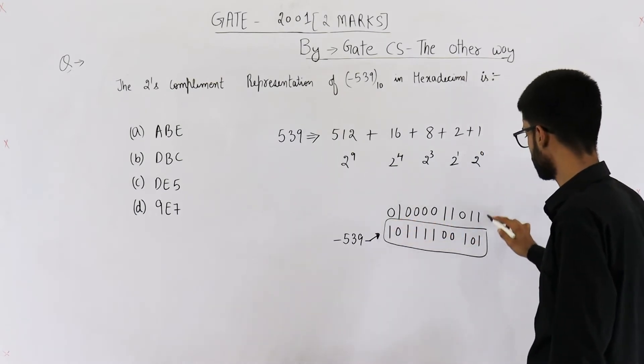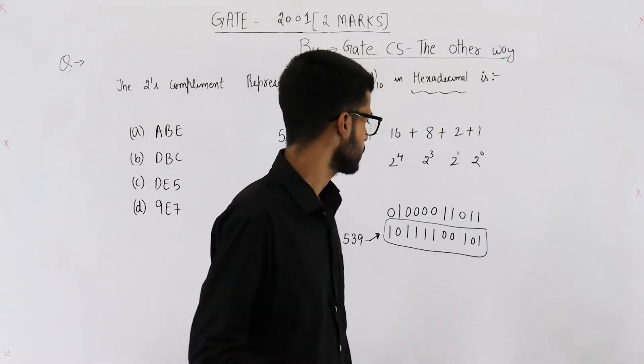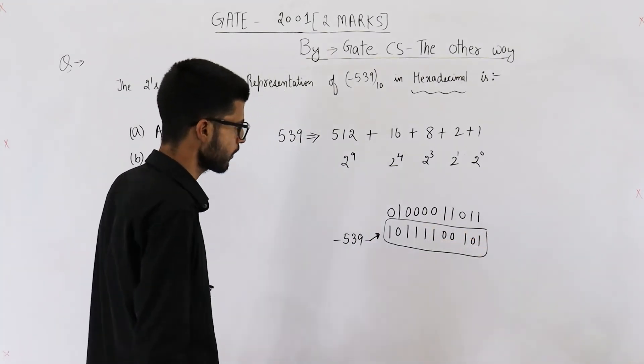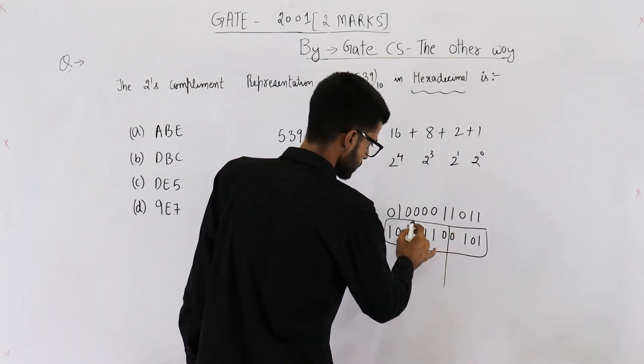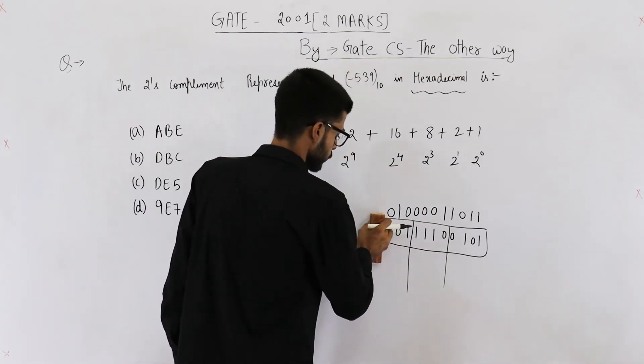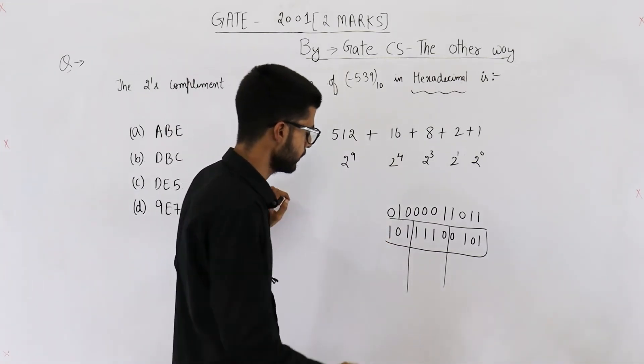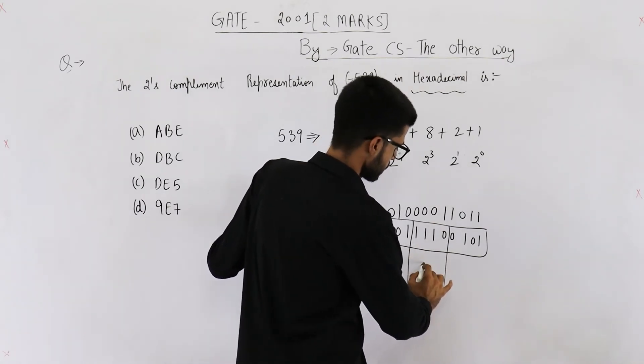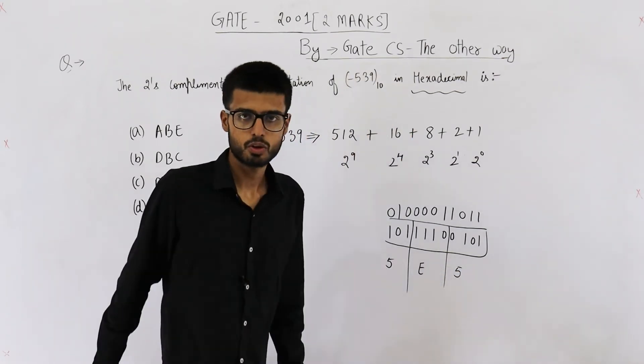Now we want its hexadecimal notation. To convert it into base 16, let us combine 4 bits starting from right hand side. So these are 4 bits, the next 4 bits are these, and you can combine the last 4 bits. This is the last group, so this will be 5, this is E, and this is 5. But you can see no such option exists.